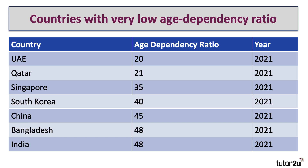Here are some countries with very low age-dependency ratios. UAE and Qatar are countries with a young population and a huge influx of young migrant workers, which has dragged down their age-dependency ratio. Singapore: 35. South Korea: 40 — but that is rising as we speak. And China: 45.